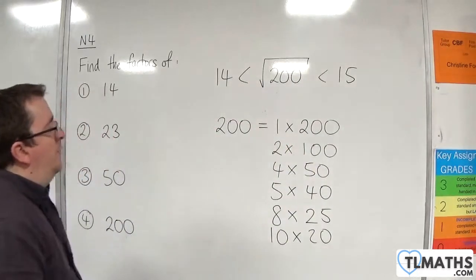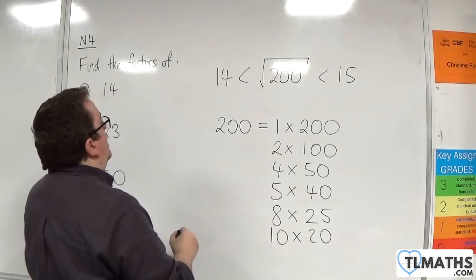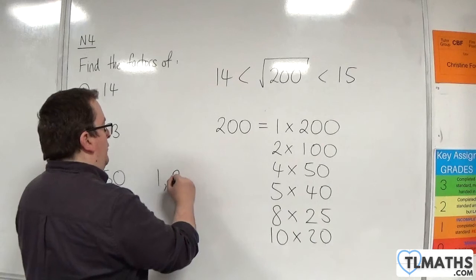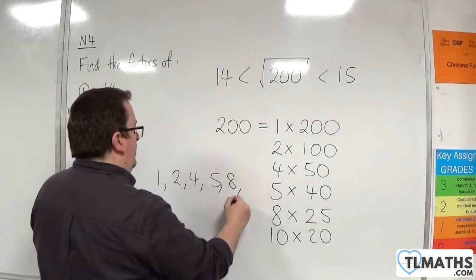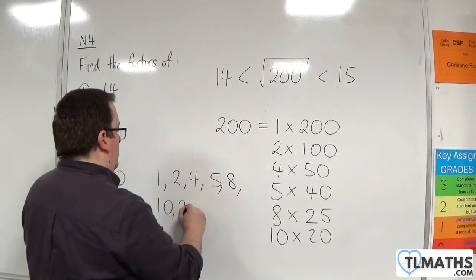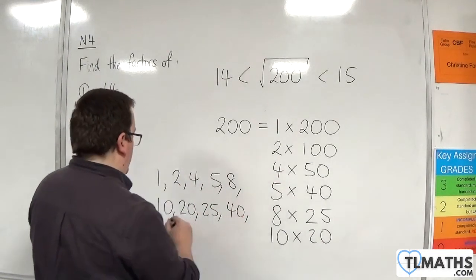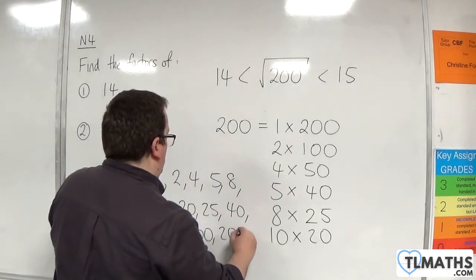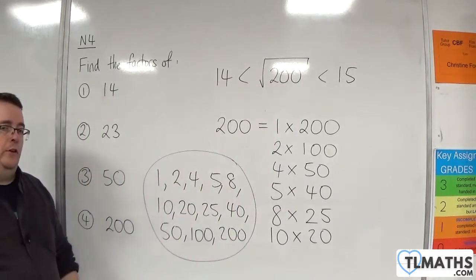So, the factors of 200 are, I will write them here. So, we have 1, 2, 4, 5, 8, 10, 20, 25, 40, 50, 100, and 200. These are the factors of 200.